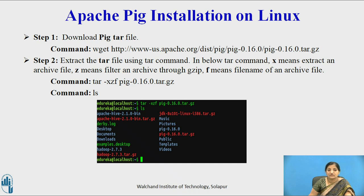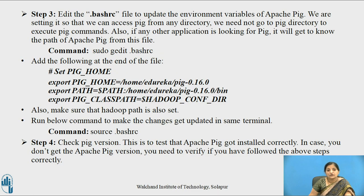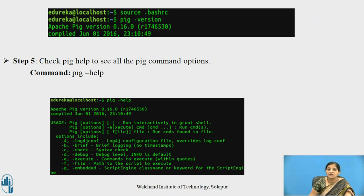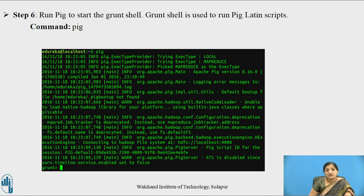After installing Hadoop, we start with the installation of Apache Pig on Linux. Download the Pig tar file and extract it using the tar command. Edit the .bashrc file to update the environment variables of Apache Pig, setting PIG_HOME and the Hadoop path so Pig can be accessed from any directory. Run source .bashrc to apply the changes. To verify the installation, check the Pig version using the version command. You can also use pig -help to see all pig command options. Run pig to start the Grunt shell, which is mainly used to run Pig Latin scripts.